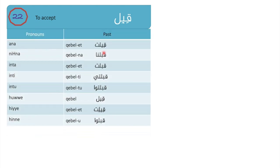Ana iblit. Nihna iblna. Enta iblit. Enti iblit. Entu iblitu. He iblit. And henna iblu — they accepted.